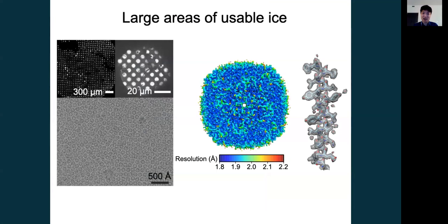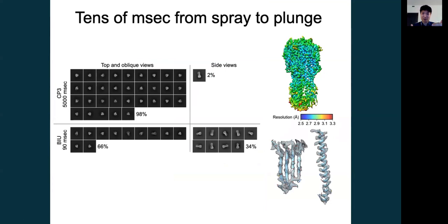This device allows us to have large areas of usable ice, which gives you a two-angstrom hemagglutinin reconstruction, as well as be able to reduce the time from spraying to plunging to give you a less-preferred oriented hemagglutinin dataset that we can reconstruct to 2.9 angstroms.